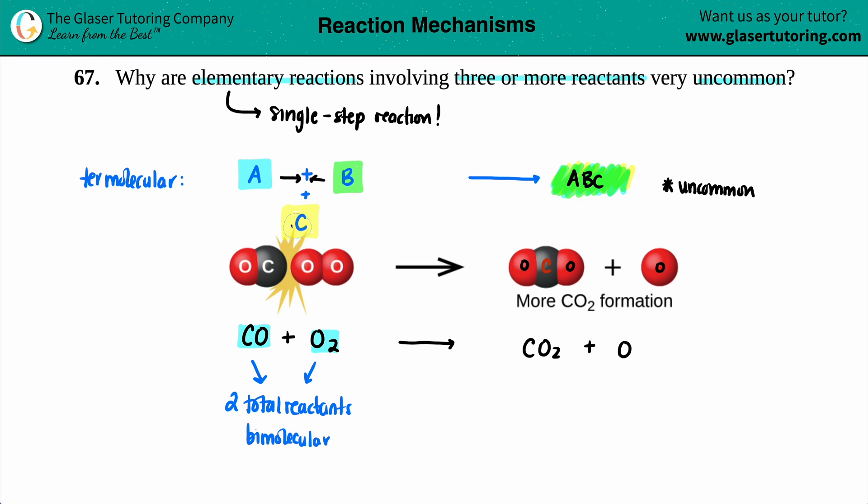We could rearrange this a little bit. The probability of having these three come together at the same time and clash, kind of like these two guys, they have to have the perfect orientation with the perfect amount of energy for all three of them.